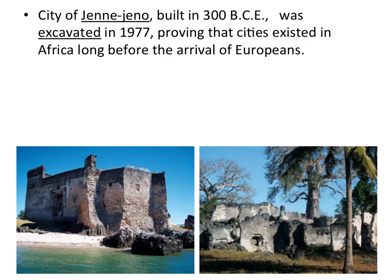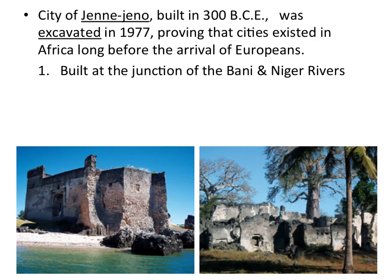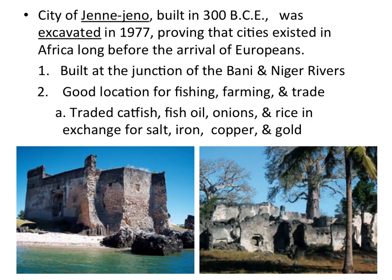The city of Djenne-Djeno was built around 300 BCE and was excavated in 1977, proving that cities did actually exist in Africa long before Europeans arrived. Europeans did not bring civilization to Africa — Africa was civilized before the Europeans came. Djenne-Djeno was built at the junction of the Bani and Niger rivers, a great location for fishing, farming, and trade. They traded catfish, fish oil, onions, and rice in exchange for salt, iron, copper, and gold. The pictures shown are photographs of the ruins of Djenne-Djeno.